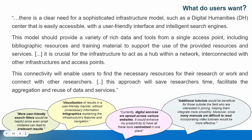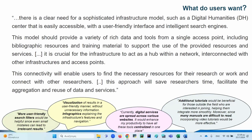One of the key conclusions is that there is a clear need for a sophisticated infrastructure model — such as a digital humanities center — that is easily accessible with a user-friendly interface and intelligent search engines. This model should provide a variety of rich data and tools from a single access point, including bibliographic resources and training material. The infrastructure should act as a hub interconnected with other infrastructures, saving researchers time and facilitating data aggregation and reuse.